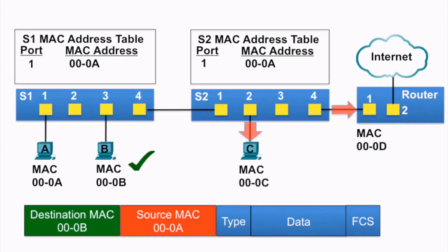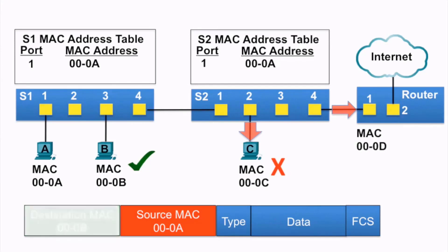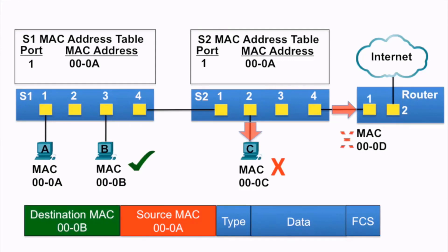PCC receives the ethernet frame but its MAC address does not match, so it does not accept the rest of the frame. The router also receives the ethernet frame, examines the destination MAC address against its own MAC address, notices it is not a match, and does not receive the rest of the frame.